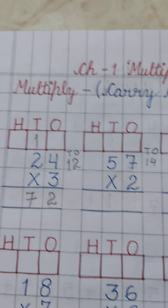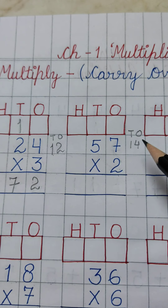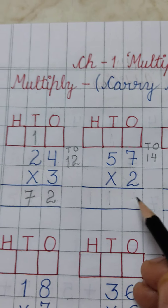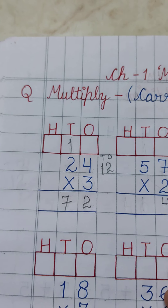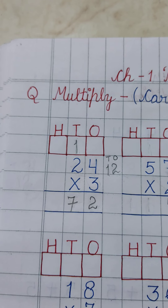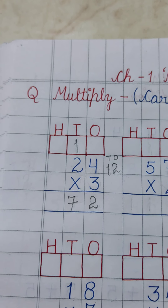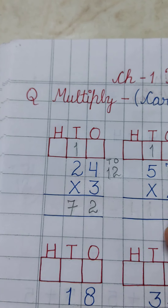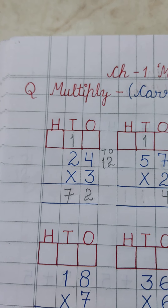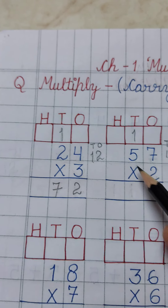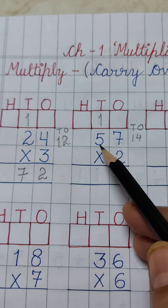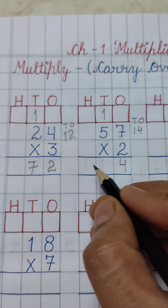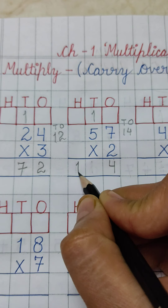We have to write 4 — the 1's place digit — at the 1's place column, and we will take this 1 to the 10's place as carry over. Now 2 5's are 10, and 10 plus 1 is 11.